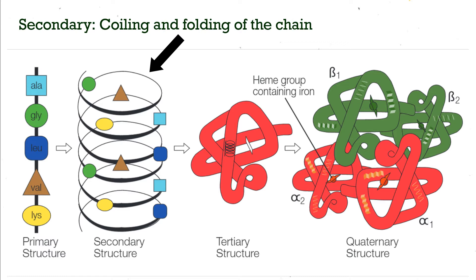The secondary structure of a protein occurs due to the coiling or folding of the polypeptide chain and is caused by hydrogen bonding between the amino acids. This level of structure can be seen as an intermediate between the primary structure and before the protein folds into its final 3D shape.